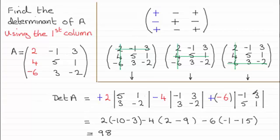Okay working out those determinants and multiplying them with the number in front of them gives you 98. Alright.